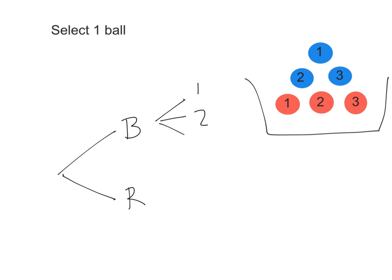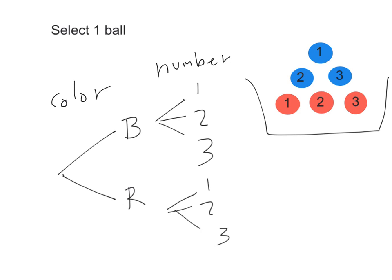The same ball you selected also has a number, which could be one, two, or three — and the same applies for a red ball. This is another example of two-way classification: the first way is color, the second is the number on the ball. The outcomes are: blue-one, blue-two, blue-three, red-one, red-two, red-three — six outcomes total. The tree diagram has two stages: one for color and one for number.